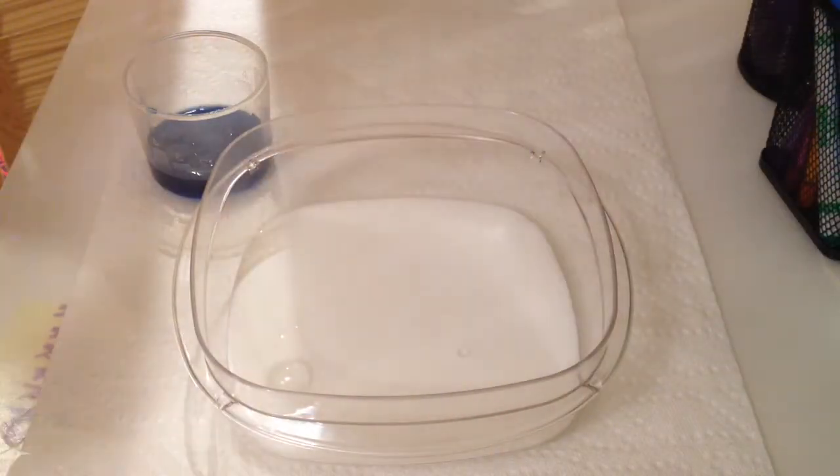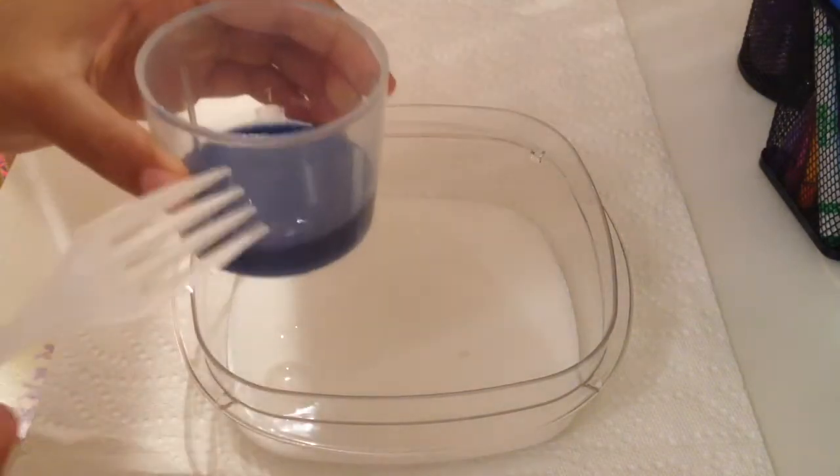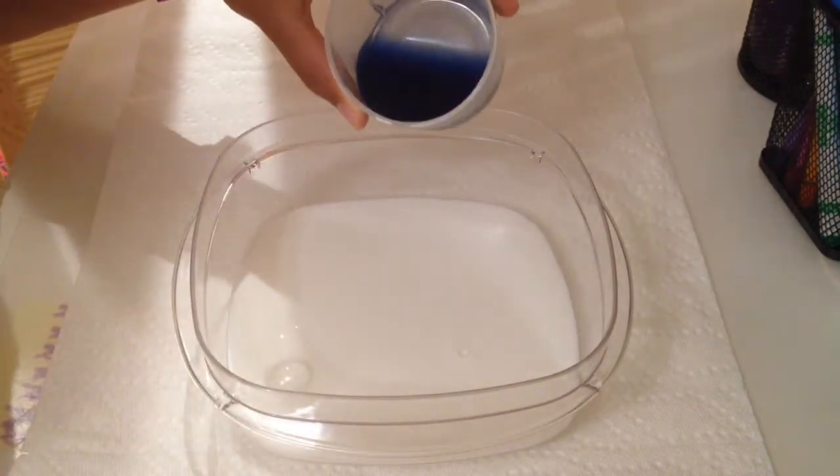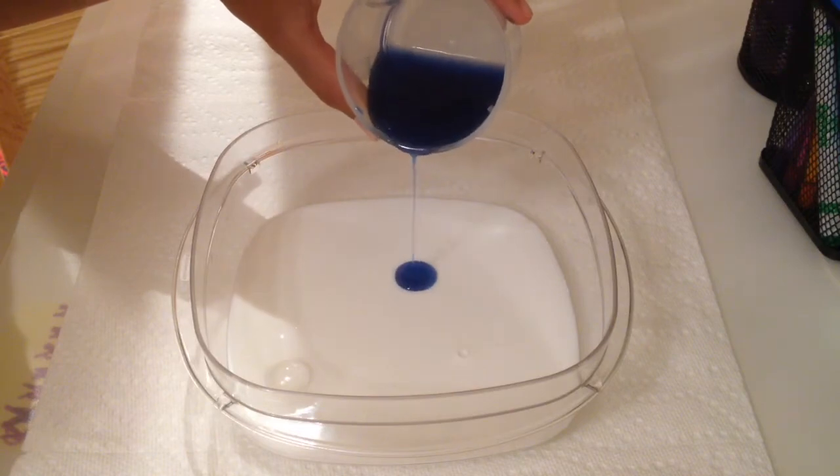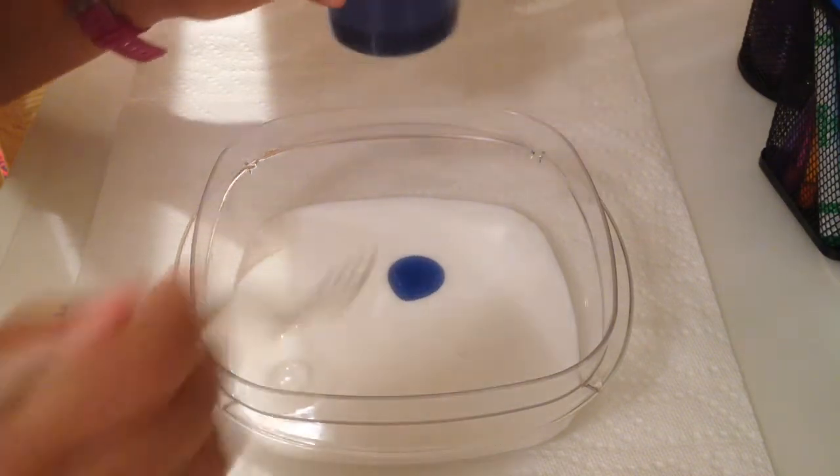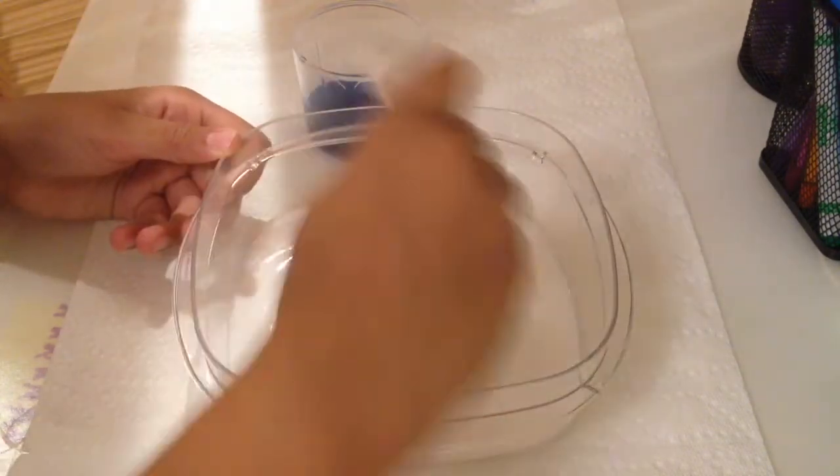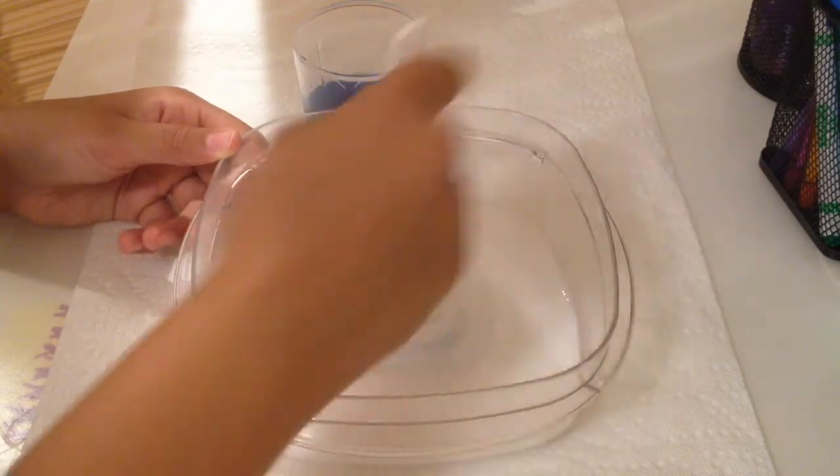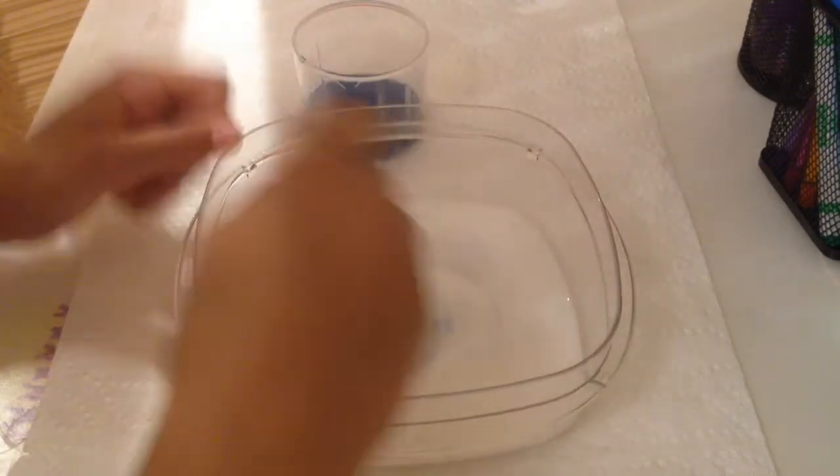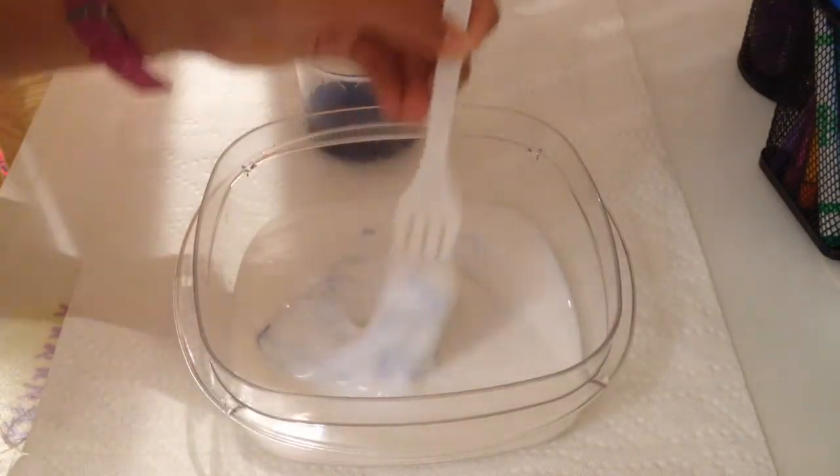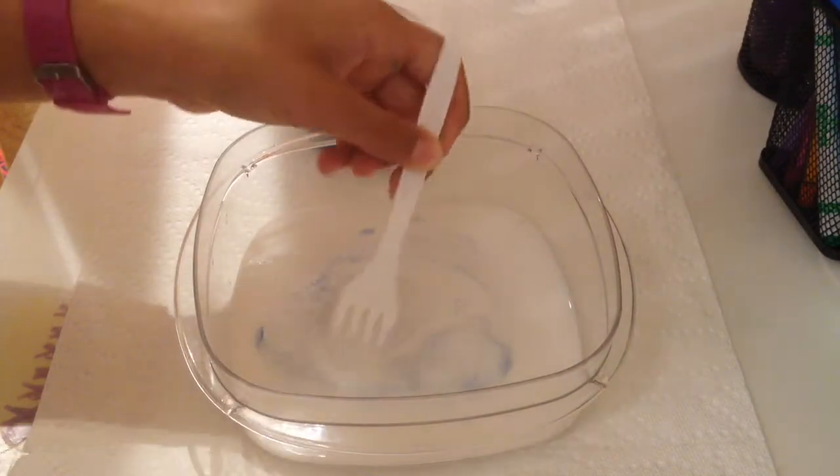Then you are going to take your Tide. Only Tide works for this and another detergent, but I don't know what it's called. You're just going to pour that into your glue and you want to start by adding a little bit of Tide and mixing it, a little bit of Tide and mixing it, and just repeating it until it's in one big blob. I'm just mixing it really well and then you want to add more Tide.